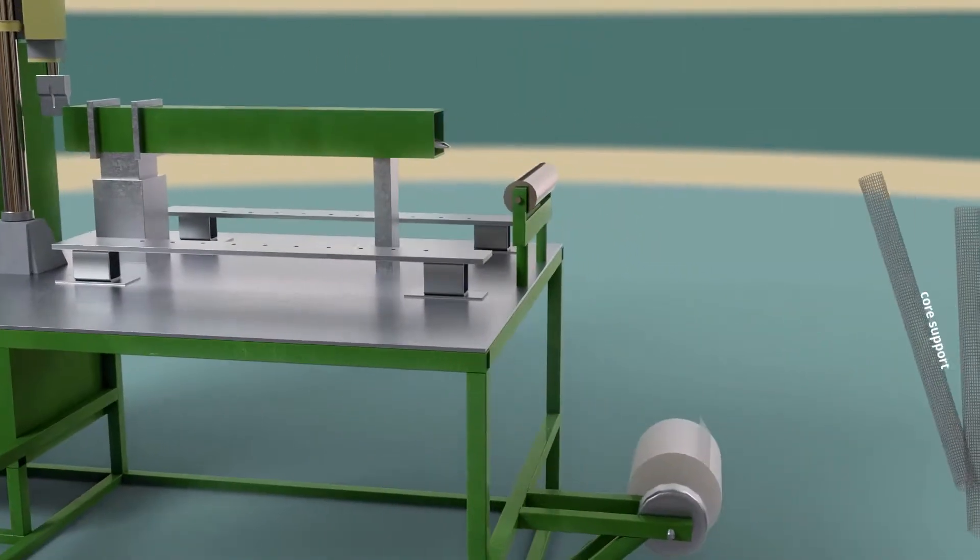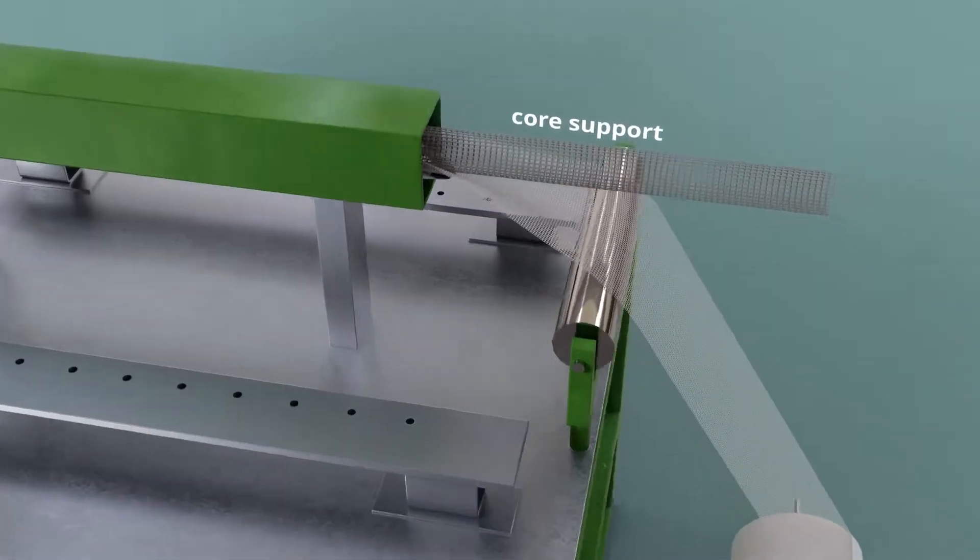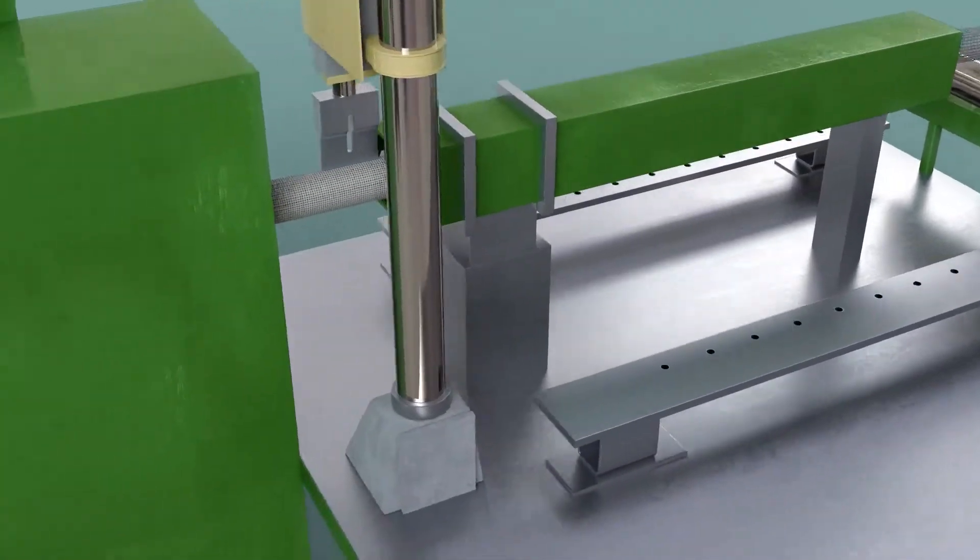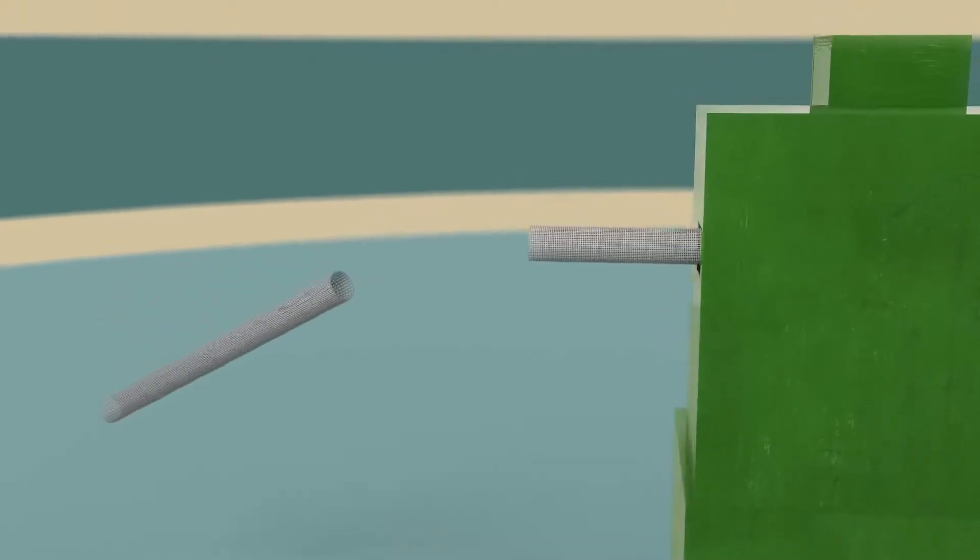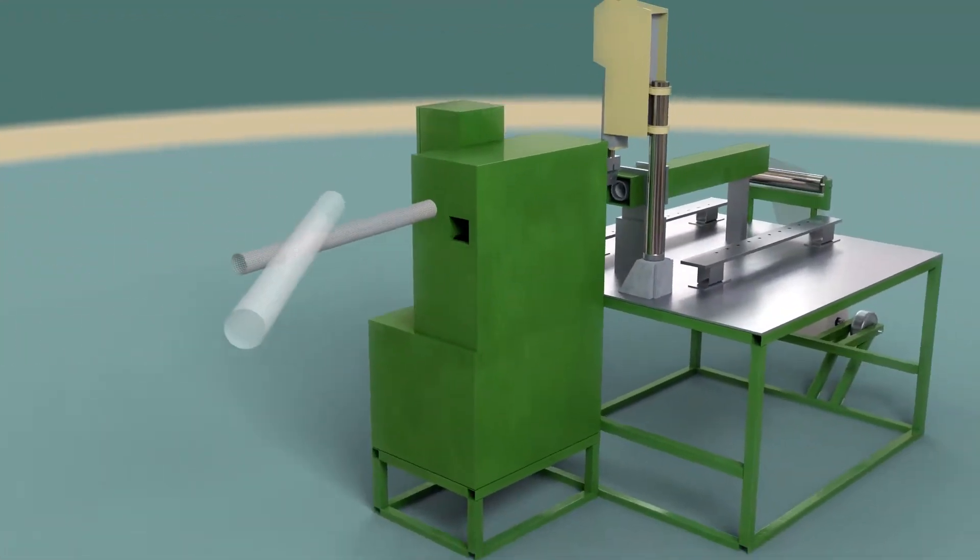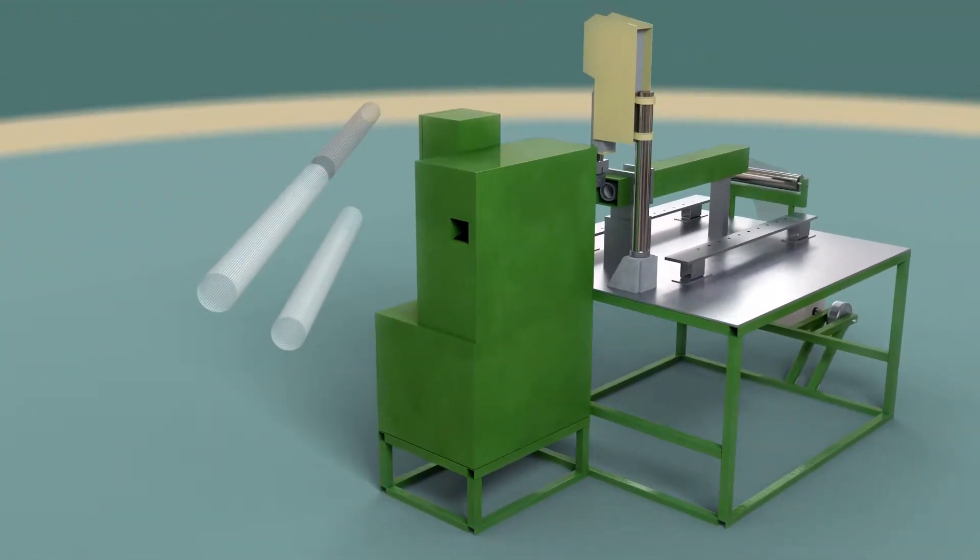In addition, we have the capability to take any fine mesh or non-woven and bond them to the cores to provide the structural support of an extruded rigid or fabricated tube while also having the separation properties of fine mesh or fabric.